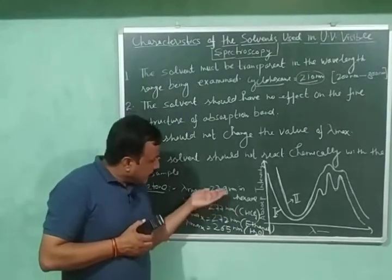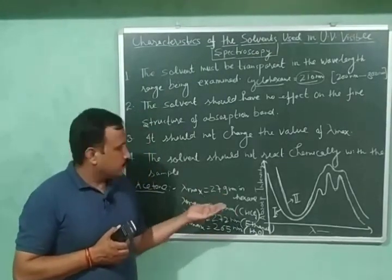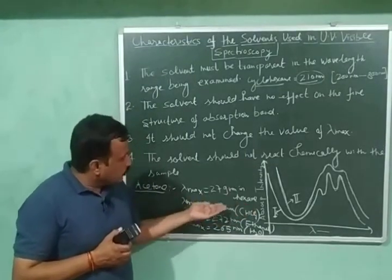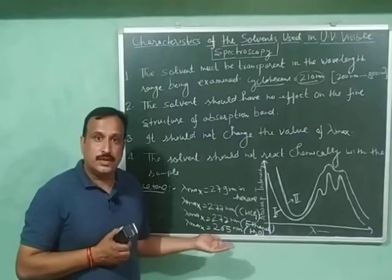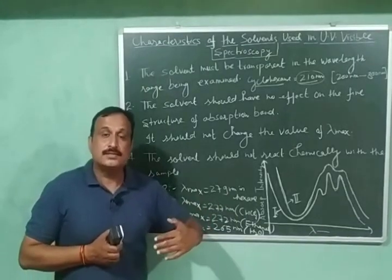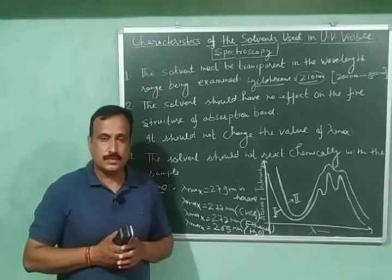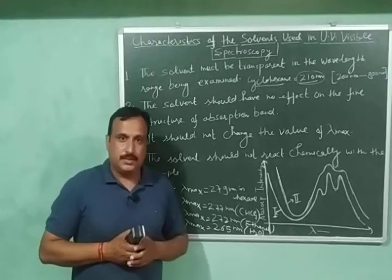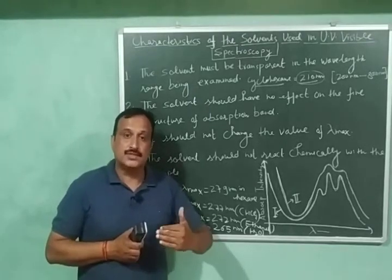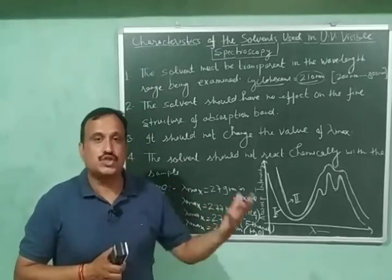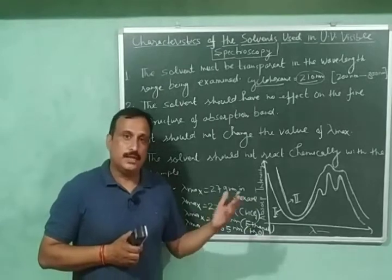So as the polarity of the solvent is increasing, hexane is a non-polar solvent. And as we are moving towards the more polar solvents, you can see that there is a significant change in the value of the lambda maximum. So this should not happen. We should change the solvent in such a way that there is not much change in the value of lambda maximum. So this is the third characteristic of a good solvent.